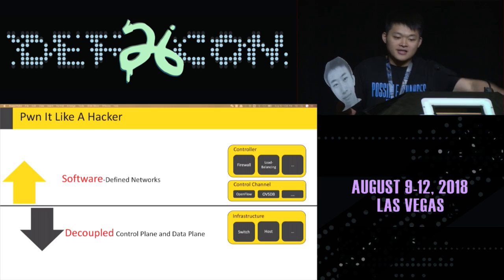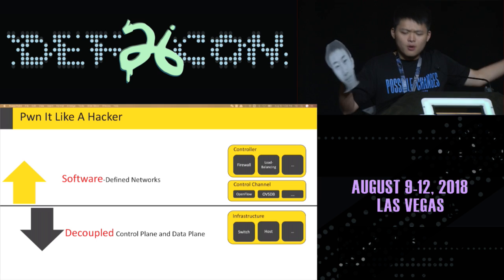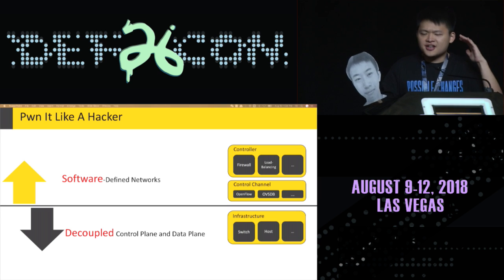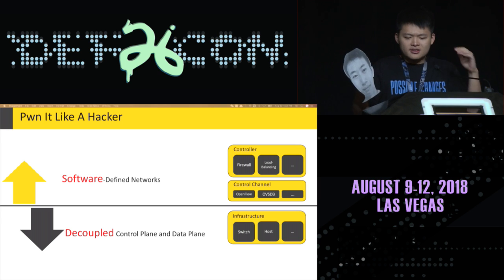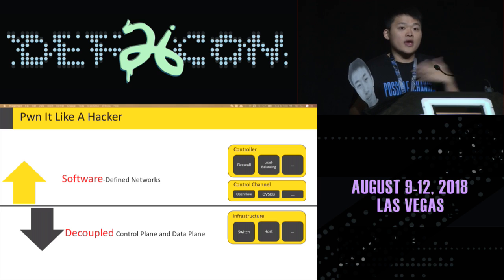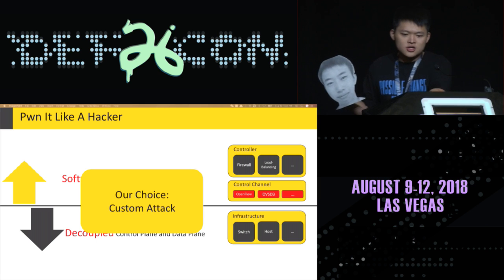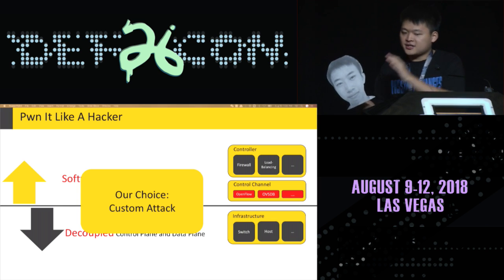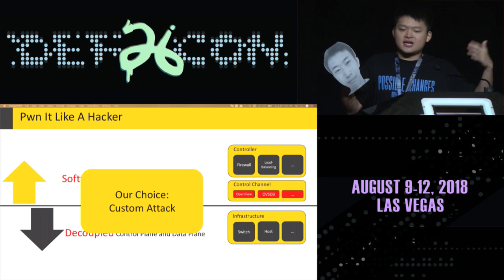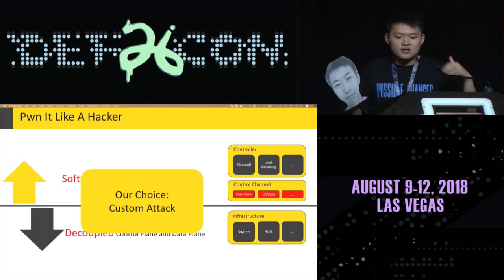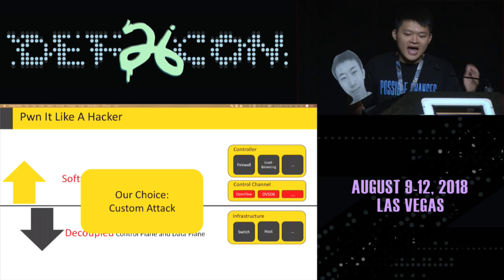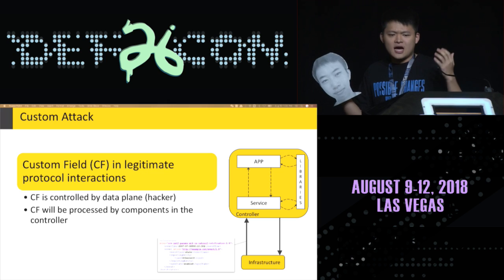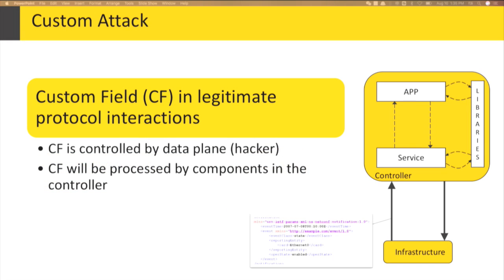However, the data plane and the control plane, as I mentioned, are decoupled, which means they only communicate with each other via predefined protocol interactions. This architecture makes it hard to exploit code vulnerabilities from the data plane, where we always are. So in this talk, we introduce the custom attack, which breaks the border built by the decoupled planes. Unlike previous attacks that focus on attacking the controller service logic, the custom attack can be used to attack all kinds of code vulnerabilities in the controller.